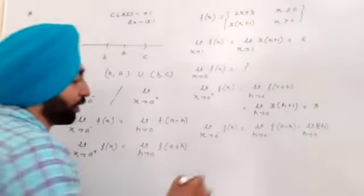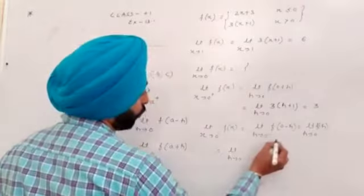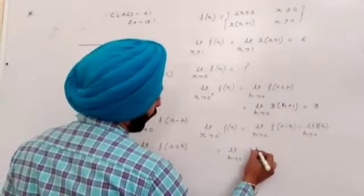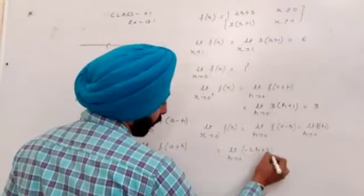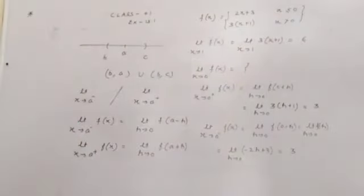So function which is 2x plus 3. If we put limit h approaches to 0, minus 2h plus 3. Now I will put h equals 0. So my left limit and right limit both have answer 3.